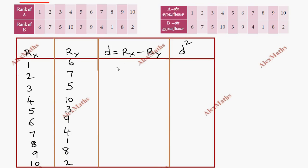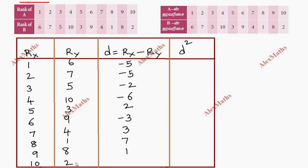The differences are: 1 minus 6 = minus 5, 2 minus 7 = minus 5, 3 minus 5 = minus 2, 4 minus 10 = minus 6, 5 minus 3 = 2, 6 minus 9 = minus 3, 7 minus 4 = 3, 8 minus 1 = 7, 9 minus 8 = 1, 10 minus 2.